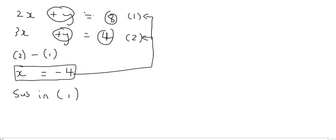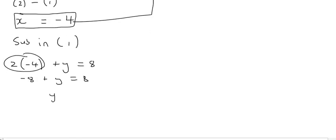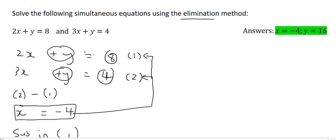Equation number one says 2 times x. Now we know that x is minus 4, so we'll put it there in a bracket: 2(-4) plus y equals 8. That gives you minus 8 plus y equals 8, and then you take that minus 8 to the right hand side where it will be 8 plus 8, so y equals 16. So there we have it: x equals minus 4 and y equals 16.